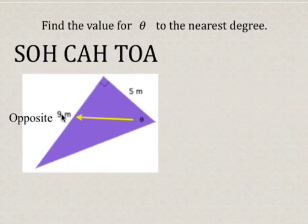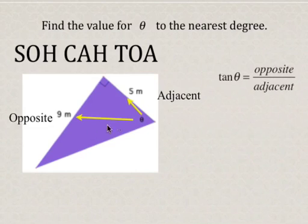So the 9 meters is the side opposite the angle theta, and the 5 meters is adjacent to theta. So our opposite is 9, and our adjacent is 5.